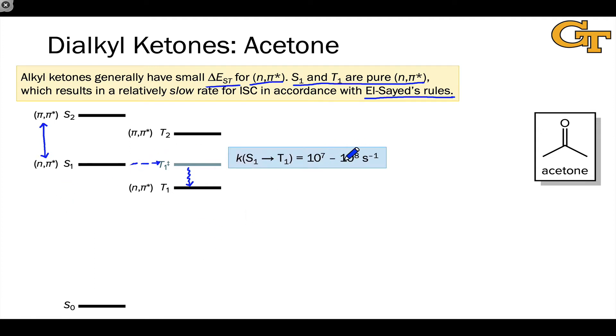In practice, you'll see the number 10^8 per second thrown around for the rate constant of S1 to T1 ISC. The number's not that important for our purposes, and we'll see this over the next couple of slides.